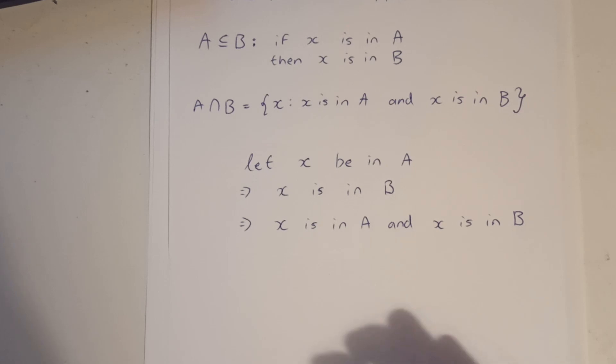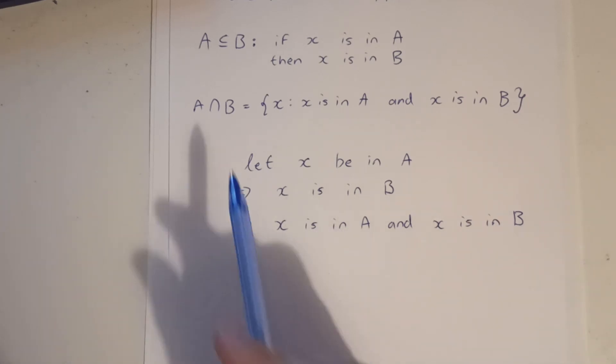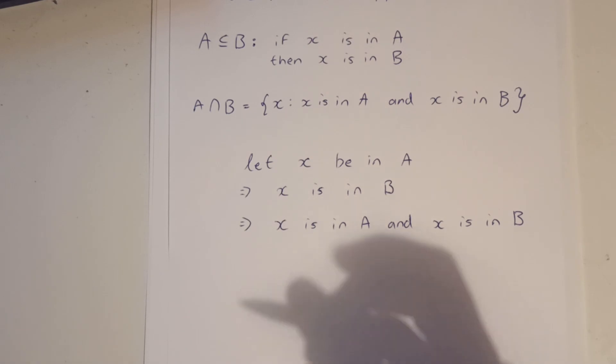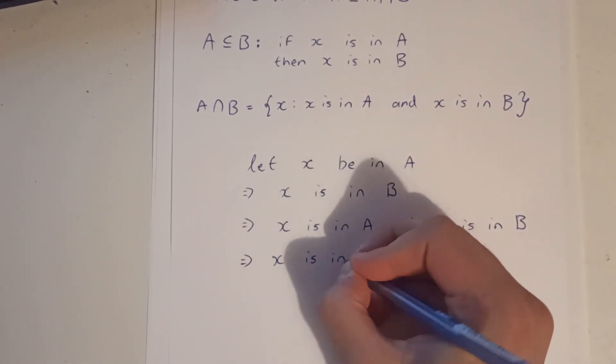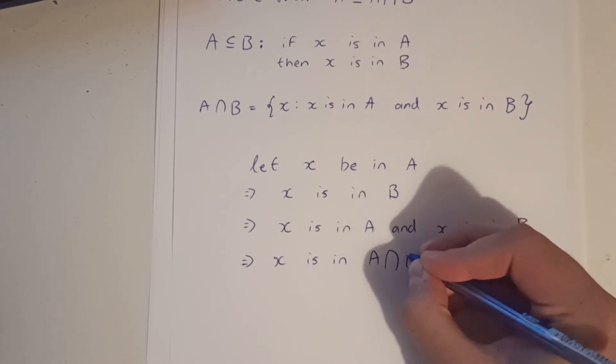Okay. So if X is in A, and X is in B, then X fulfills the property of A intersection B. So we can say from there that X is in A intersection B.